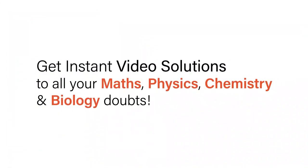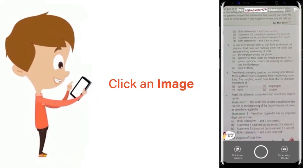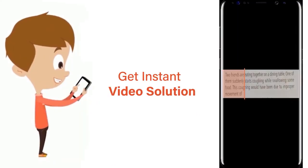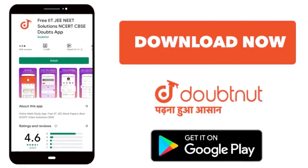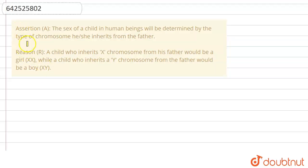With Doubtnet, get instant video solutions to all your maths, physics, chemistry and biology doubts. Just click the image of the question, crop the question, and get instant video solution. Download Doubtnet app today. The question here is the assertion-reason type.